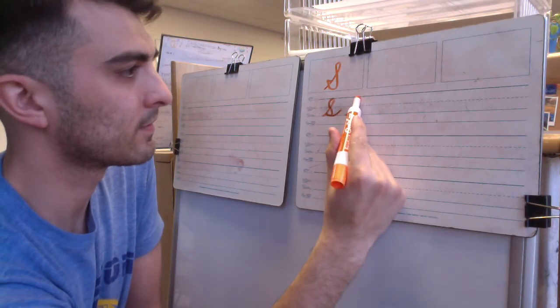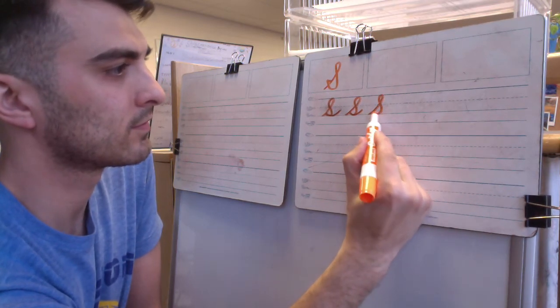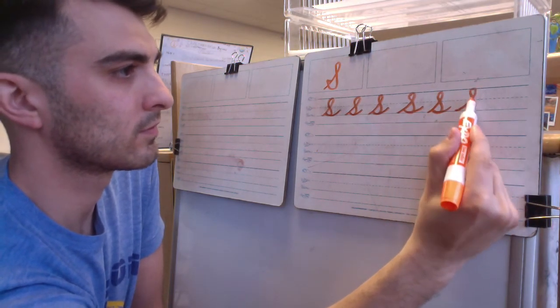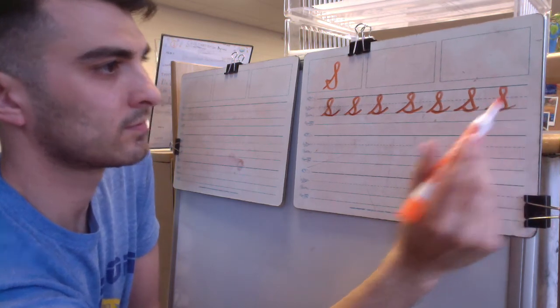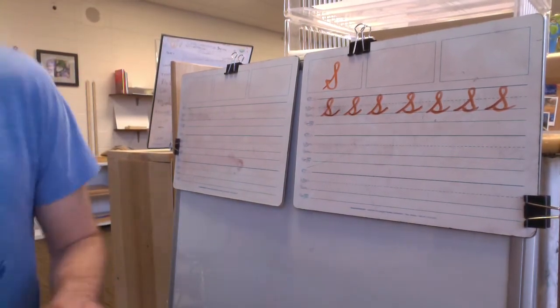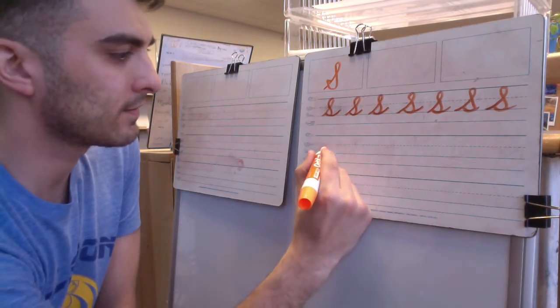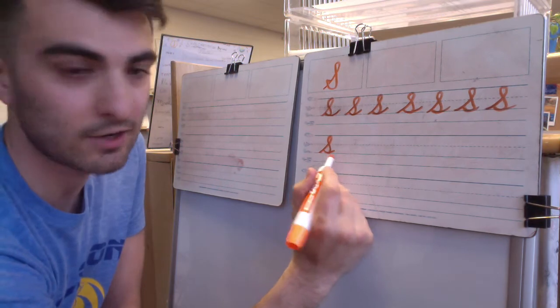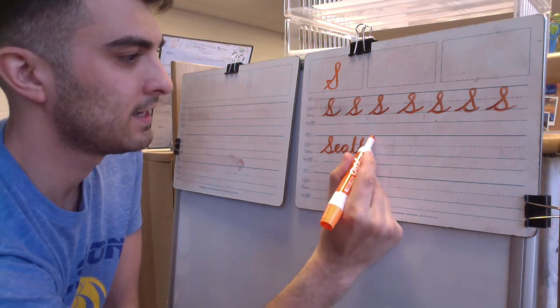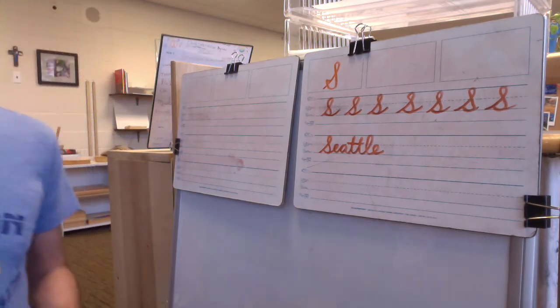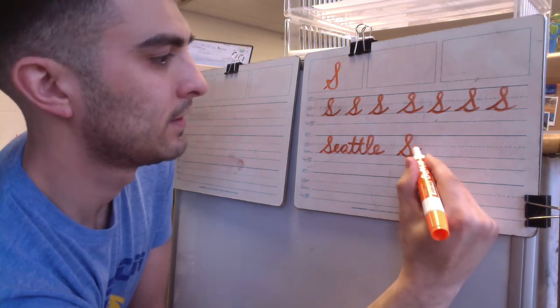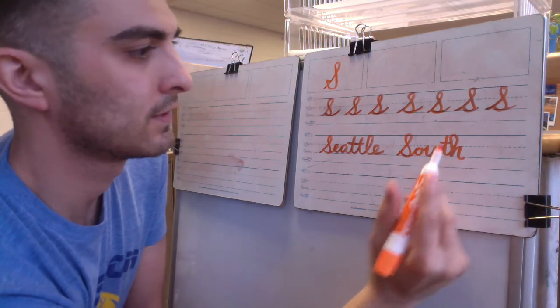I'll do the example over here because it's the only letter for this one. So let's do Seattle. Capital S, it ends down here, so we'll connect directly to the E. S-E-A-T-T-L-E. Cross both of your T's. One more. How about South Dakota.